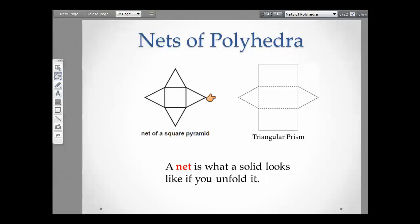The net of a square pyramid looks like this, and then when you lift up all those triangles to meet at one point, you'll have a square pyramid. A triangular prism, you're just going to fold up these sides right here, and you'll have a triangular prism.